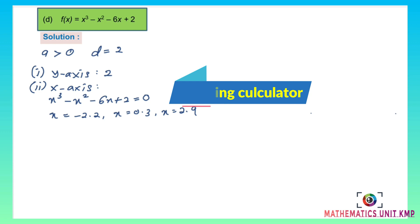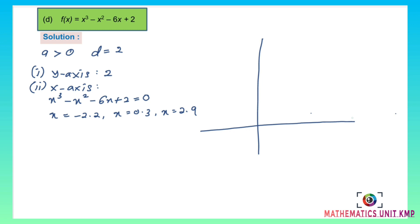Now try to sketch the cubic graph. Plot the inflection point at (0, 2) and mark the x-intercepts at negative 2.2, 0.3, and 2.9.